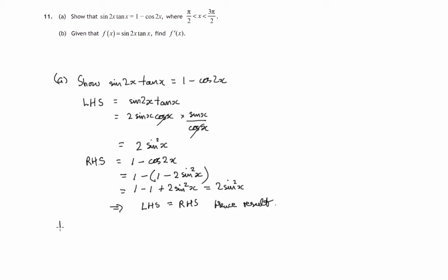Part B involves differentiation. We're told that f of x equals sin 2x times tan x. We can't differentiate this directly as it stands — it's a product of two things involving x. So let's rewrite it using the result from Part A: we know it's exactly the same as 1 minus cos 2x, and now we can differentiate that form.